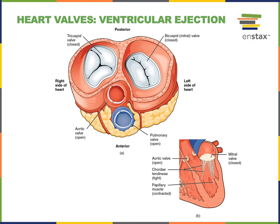During ventricular systole, when the pressure of blood inside the ventricles becomes higher than the pressure of blood inside the atria, the AV valves are forced closed. When the pressure of blood inside the ventricles becomes higher than the blood pressure inside the arteries, the semilunar valves are forced open and blood flows out of the ventricles into the arteries during the ventricular ejection phase of the cardiac cycle.